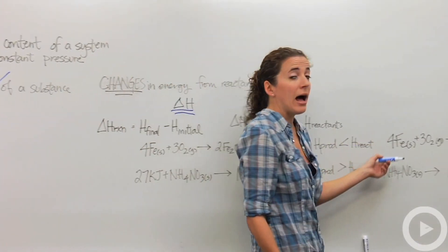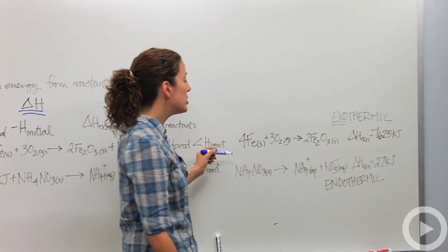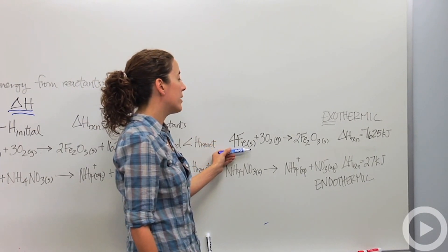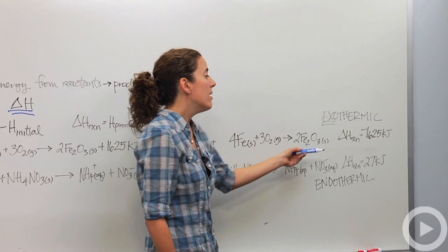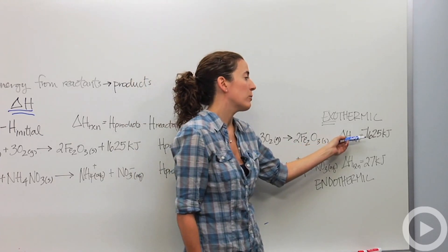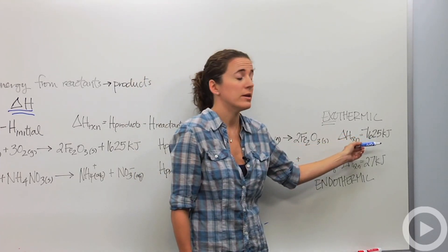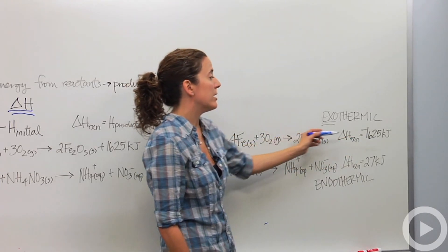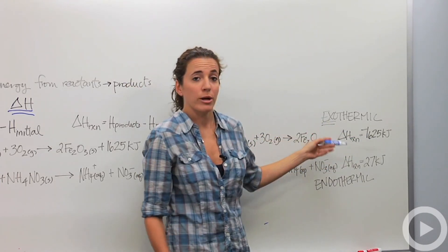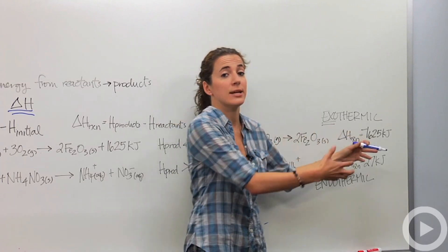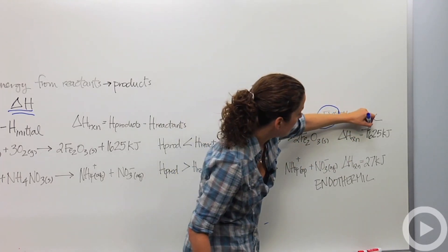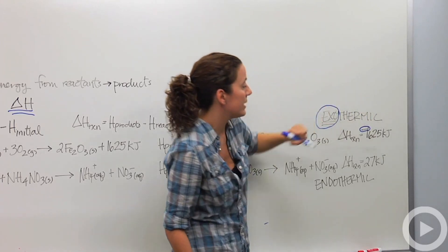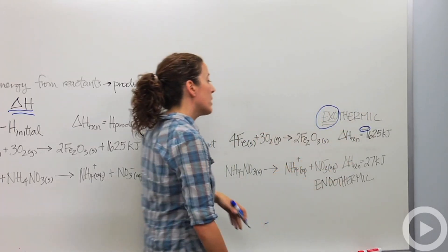So if we were to write this out properly in a thermochemical equation, we would say iron plus oxygen yields rust or iron three oxide. And we're going to include the delta H and we're going to say it releases 1625 kilojoules of heat. The products minus the reactants is going to be negative. And we're going to call this exothermic because we're releasing heat. Heat is exiting the system. So when you see the negative of the delta H, we're going to know that it's exiting. It's being released.